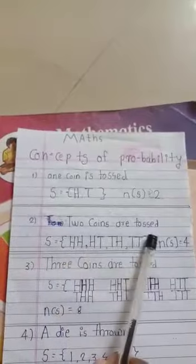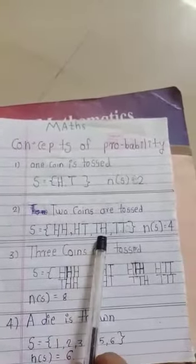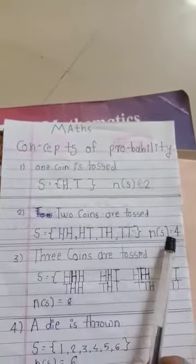Two coins are tossed. S is equal to HH, HT, TH, TT. N of S is equal to 4.